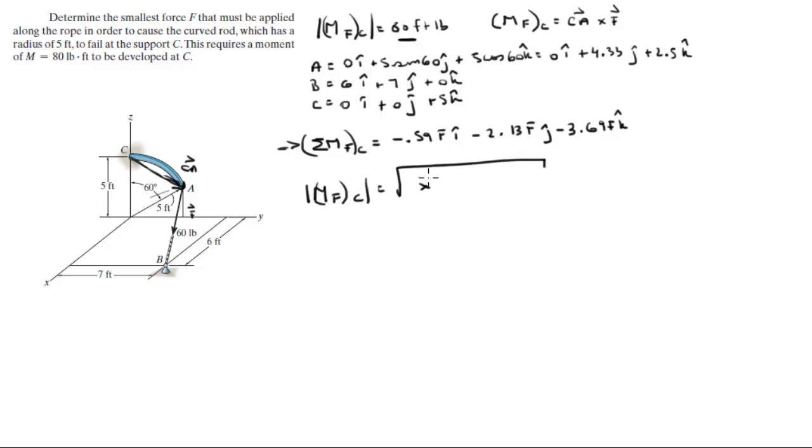Well, we did it before. It's the x component squared plus the y component squared plus the z component squared. This is the x component, this is the y component, and this is the z component. So you plug them into this formula including the F variable. And you get that this is 0.59 F squared plus 2.13 F squared plus 3.69 F squared. When you square all these and you add them together because they're all going to be attached to the variable F squared, you're going to get that this is equal to 18.5 F squared. Which means that this is equal to 4.3 F.